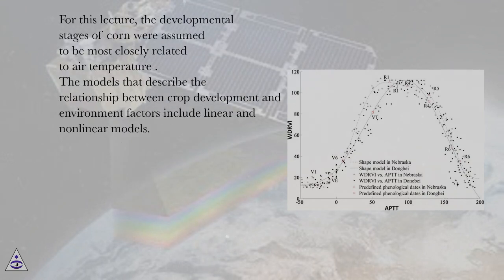For this lecture, the developmental stages of corn were assumed to be most closely related to air temperature. The models that describe the relationship between crop development and environment factors include linear and nonlinear models.